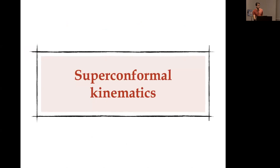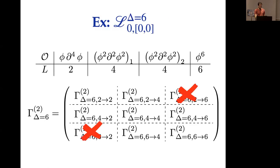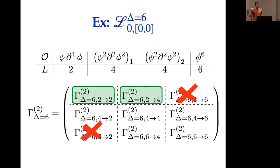There was a question about the structure: at tree level we don't change the length, at one loop we change it by two units, and at two loops by four units. This is related to the structure of the vertices: the first-order correction has a quartic vertex, then a six-point vertex at one loop, an eight-point vertex at two loops, and so on.